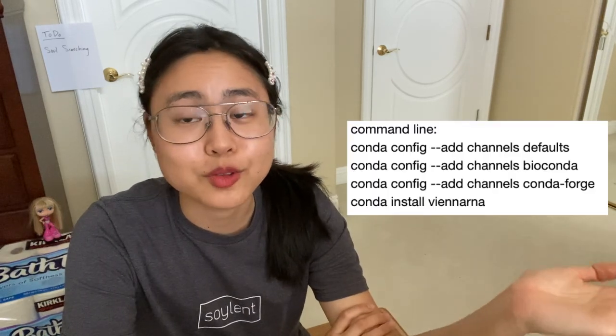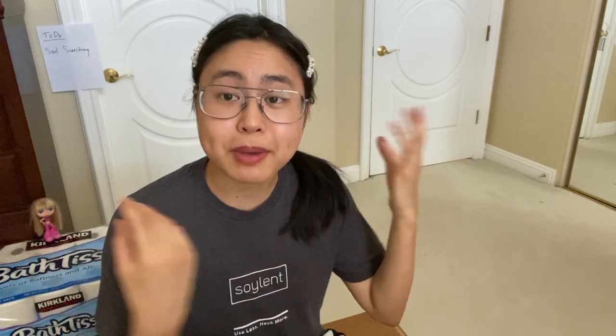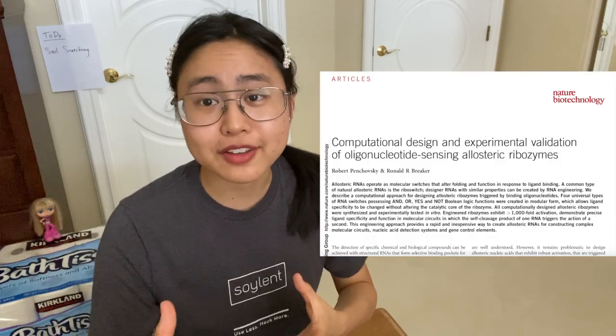The tools you're going to need to do this lab assignment are very few. The first is installing a package called Vienna RNA. A package pretty much means that all the work has been done for you — all you need to do is know how to use the package and apply it to your own problem. Here are some steps you could follow. You're also going to need this paper; you could read it if you want.